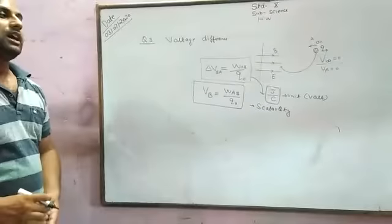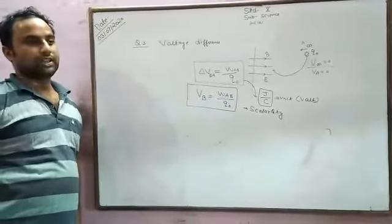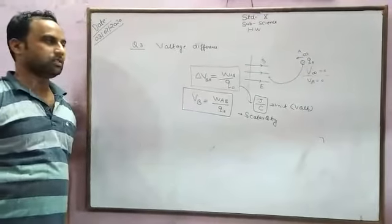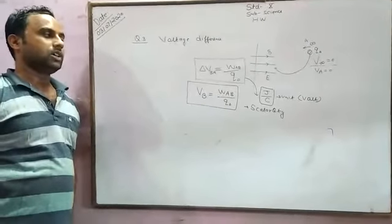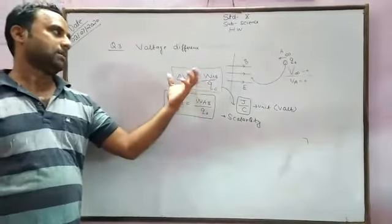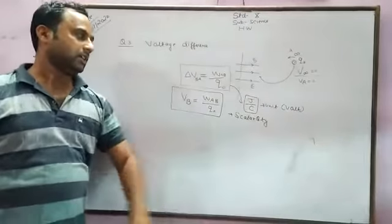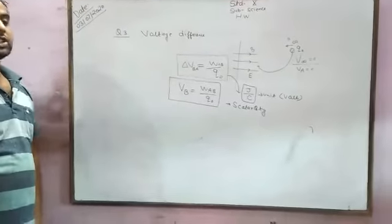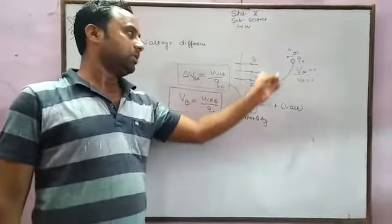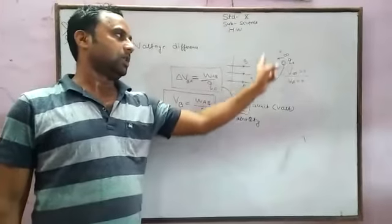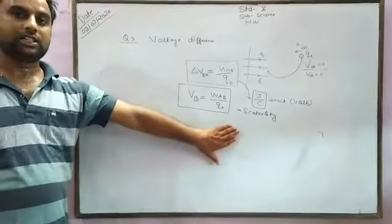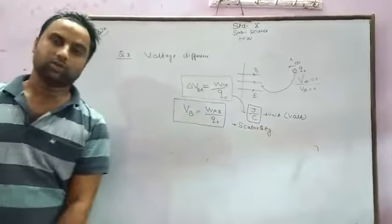If we are taking a positive quantity of test charge from infinity to a point where the electric field is present, the amount of work done in this process per unit test charge is known as potential difference. The potential difference at a point is considered with a difference point. The absolute value of the potential cannot be determined because at every reference level the potential will be zero. This is a scalar quantity and the SI unit is Joule per Coulomb.